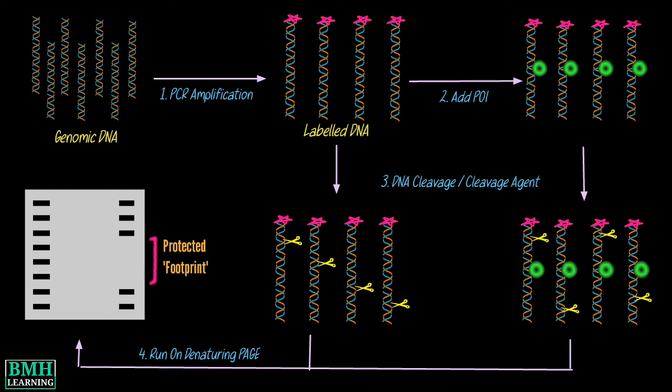No cuts are made at the specific region of DNA where proteins are bound, as the protein has protected the DNA binding site from the cleavage agent. The DNA fragments are then separated by polyacrylamide gel electrophoresis and visualized using an autoradiogram. When compared with the standard, the missing band — that is, the footprint — indicates the protein binding specific DNA sequence.